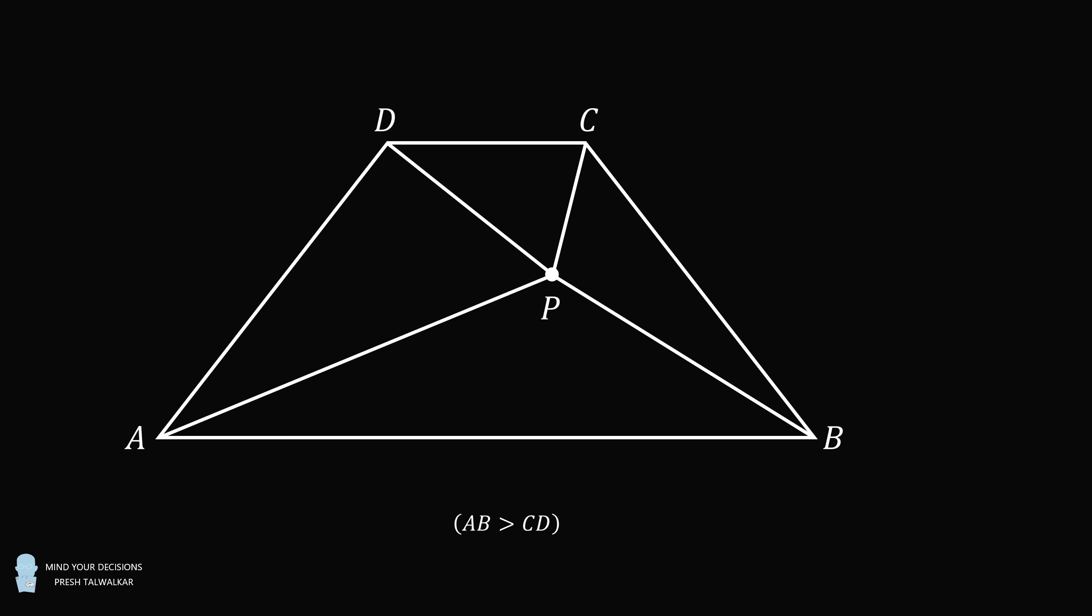Suppose triangle CPD has an area equal to 2, then the areas of the triangles going clockwise are equal to 3, 4, and 5 as shown. The question is, what is AB divided by CD equal to?